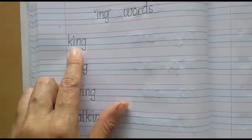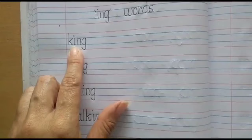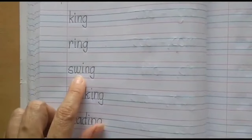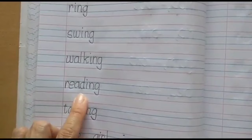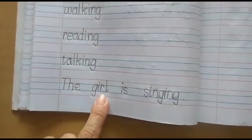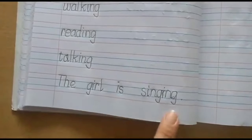Ing words. King. Children please repeat after me. Read the word after me. King. Ring. Swing. Walking. Reading. Talking. And now let's read the sentence. The girl is singing.